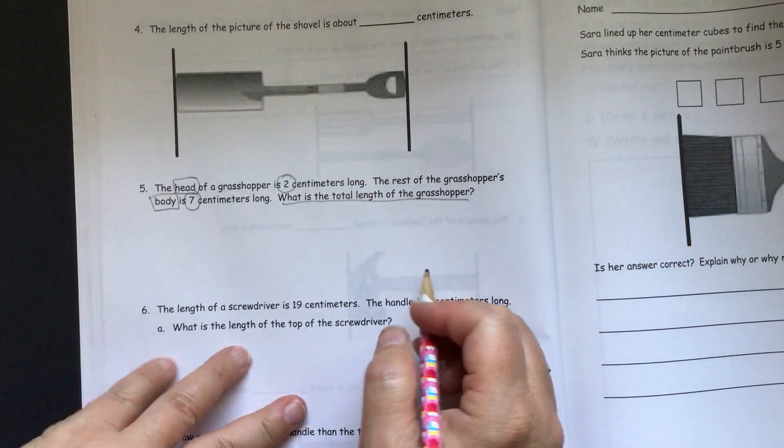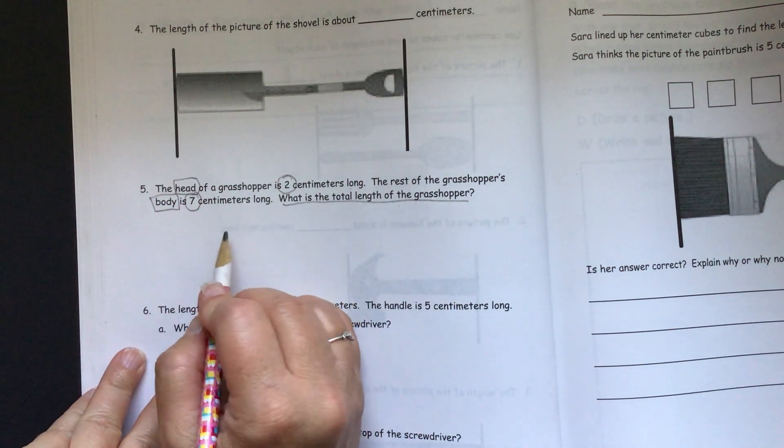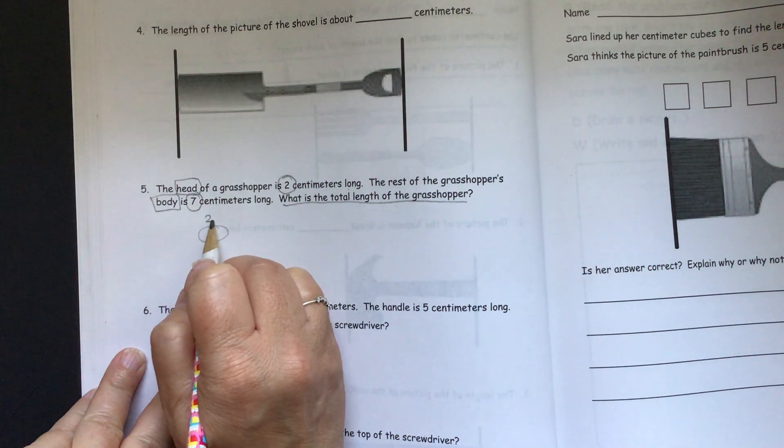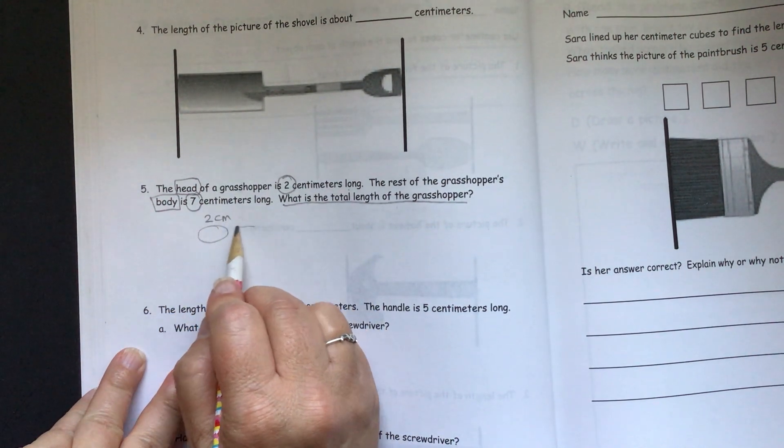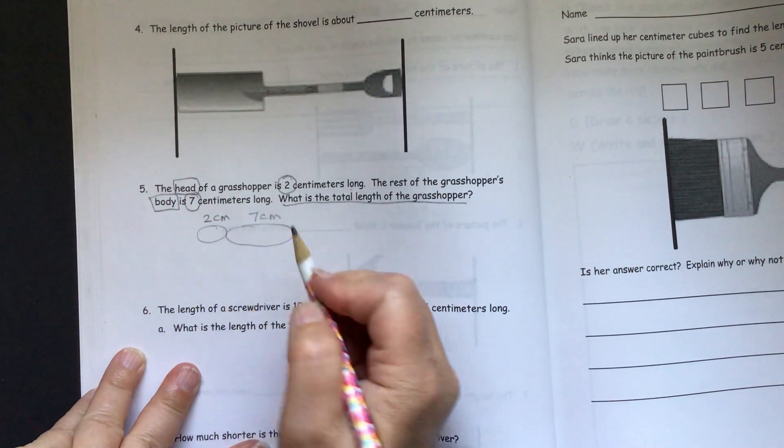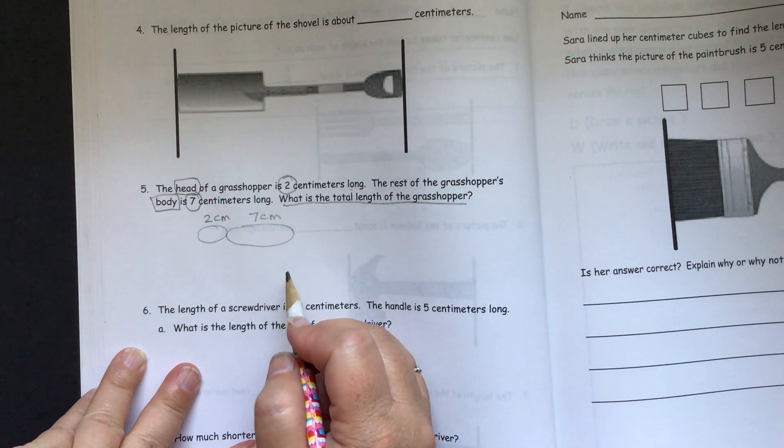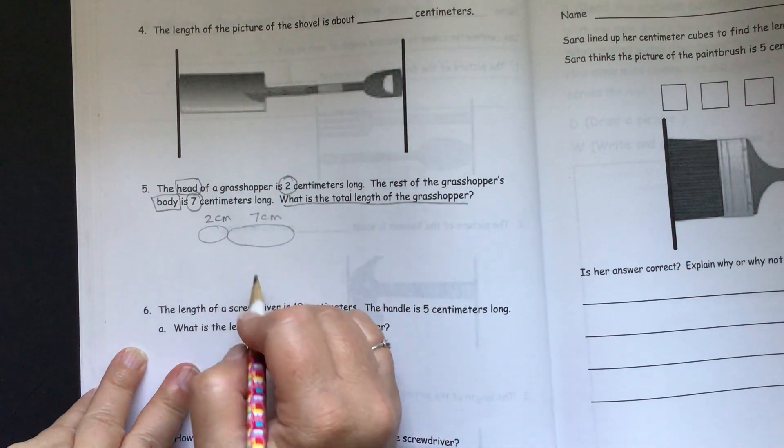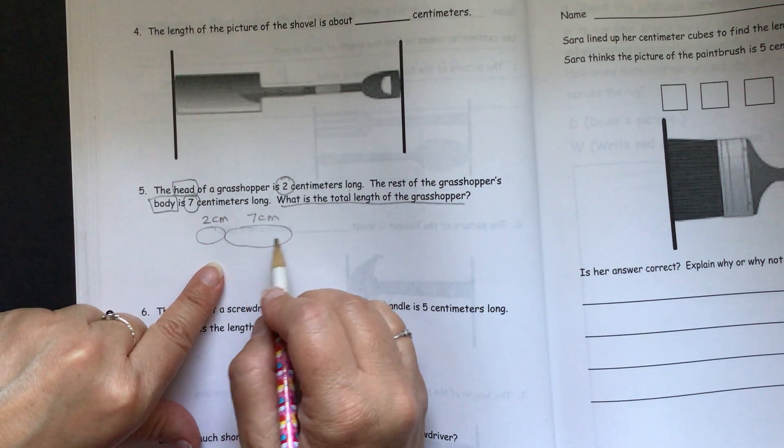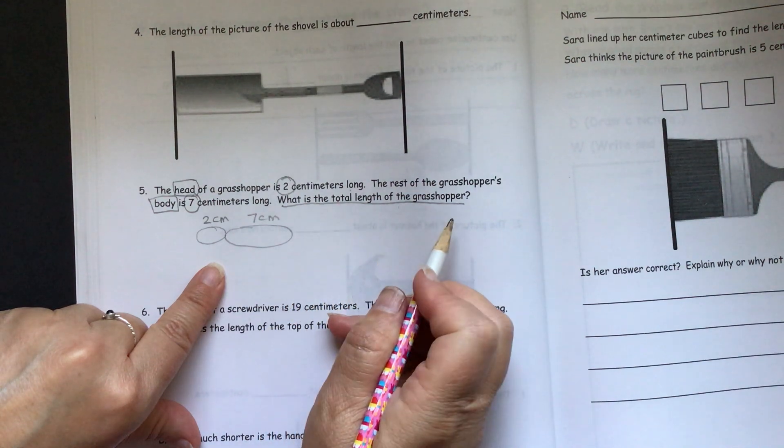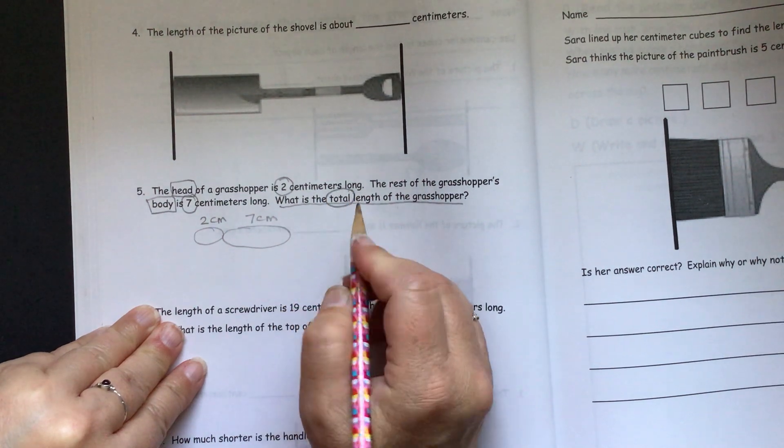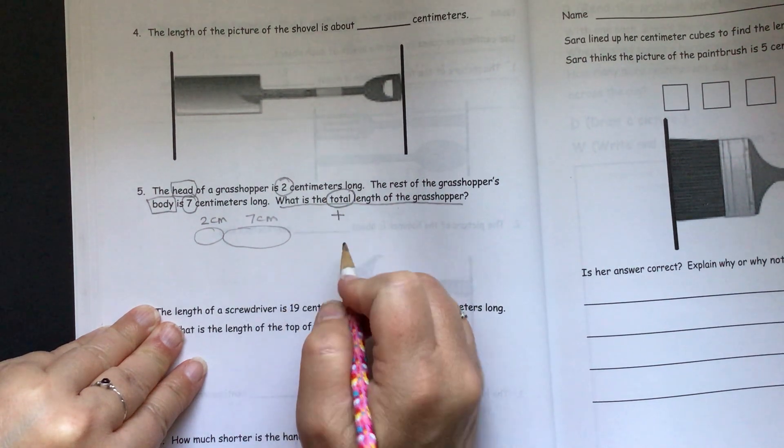So we can draw a picture. I'm just doing a rough sketch here. So we have the head is two centimeters long, and then we have the body is seven centimeters long. I'm not going to get fancy and draw the antenna or the legs or anything like that. So this is our grasshopper. And so we need to find the total length of the grasshopper. So you see total, total, and that will tell you, you can add here.